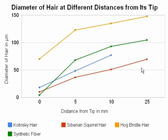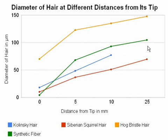From these plots one can see that Hogg Bristol hair has the largest diameter and its plot is above all others. The blue graph is Kolinsky sable hair — as mentioned, the data point at 25 mm is missing. Next is Siberian squirrel hair indicated by the red plot. This hair has the smallest diameter, and this might be one possible explanation why this hair is very soft.